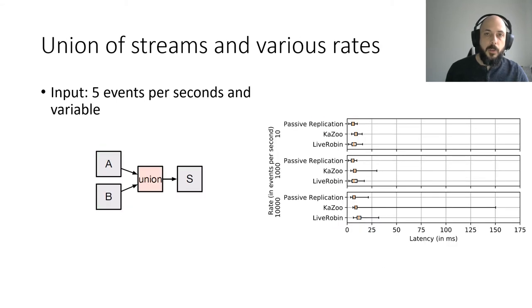We now analyze the impact of unbalanced event recipient frequencies with multiple upstream tasks. In this experiment, we do a union of the events resulting from two sources, A and B, pulled to a sink. On A, we inject 5 events per second, and we make variations on the injected throughput of B: 10 events per second, 1000 and 10,000.